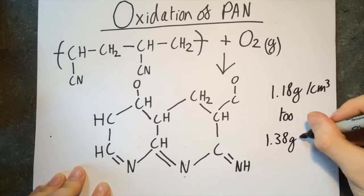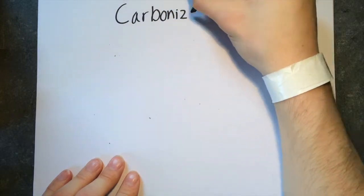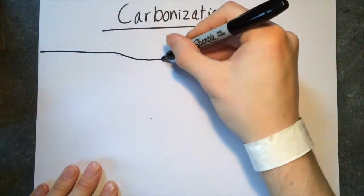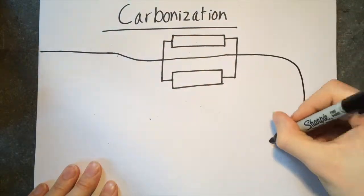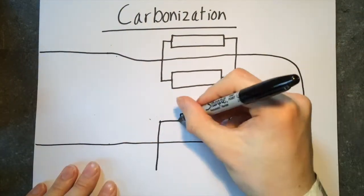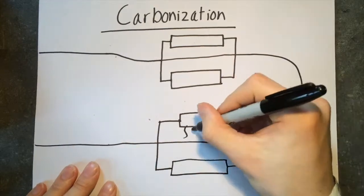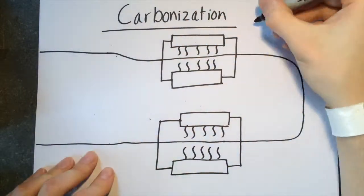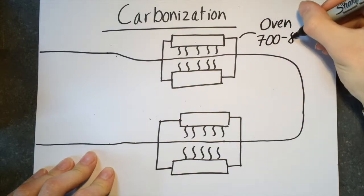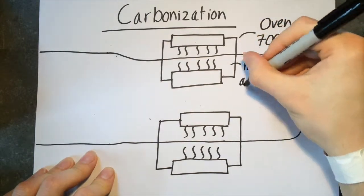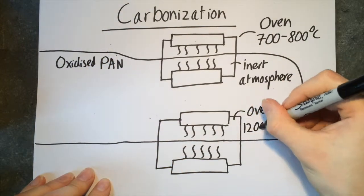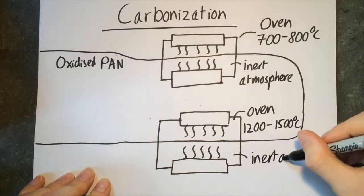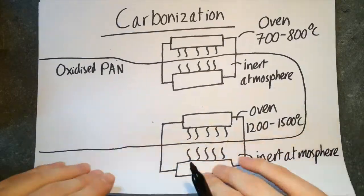Once this has occurred, carbonization needs to take place to finish the fiber. The carbonization process takes place in an inert atmosphere. At such high temperatures in the presence of oxygen, carbon atoms will be removed, thus the inert atmosphere is needed. In the inert atmosphere, only non-carbon molecules are removed. This removes any impurities and other products, generally ammonia, hydrogen cyanide, and carbon monoxide.